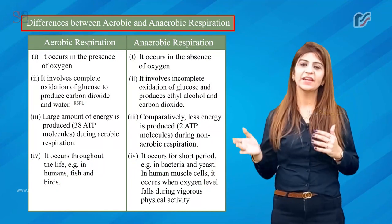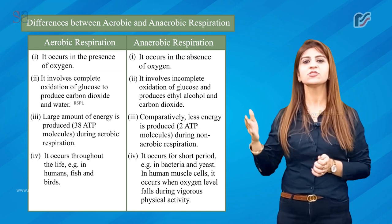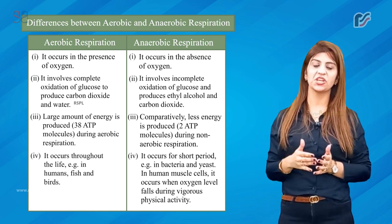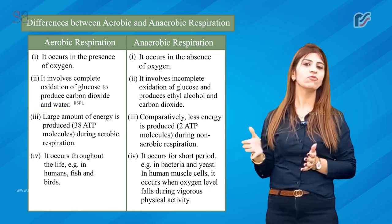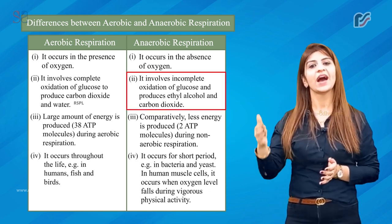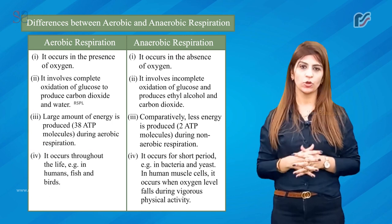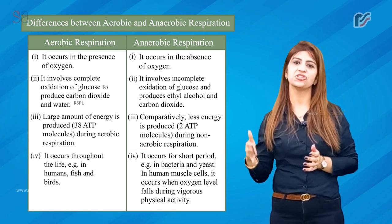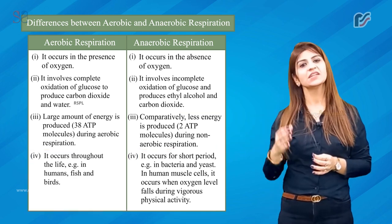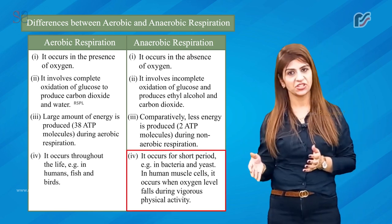Differences between aerobic and anaerobic respiration: First, aerobic respiration occurs in the presence of oxygen while anaerobic occurs in the absence of oxygen. Second, aerobic respiration involves complete oxidation of glucose to produce carbon dioxide and water, while anaerobic involves incomplete oxidation producing ethyl alcohol and carbon dioxide. Third, aerobic respiration produces a large amount of energy — 38 ATP molecules — while anaerobic produces comparatively less — 2 ATP molecules. Fourth, aerobic respiration occurs throughout life (e.g., in humans, fish, and birds), while anaerobic occurs for a short period (e.g., in bacteria and yeast).